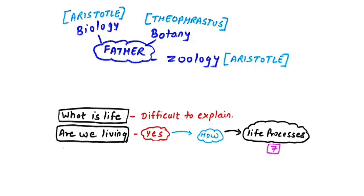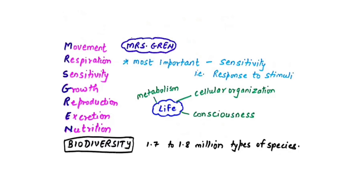Though defining life is difficult, we can prove we are living. If someone asks how you can prove you are alive, you say: I show seven different life processes. In short, these are called MRS GRIN — M for Movement, R for Respiration, S for Sensitivity, G for Growth, R for Reproduction, E for Excretion, and N for Nutrition.